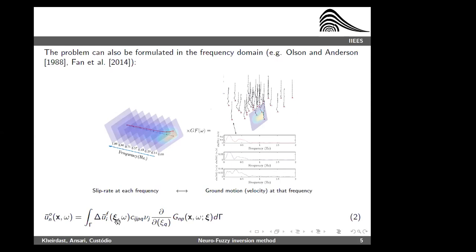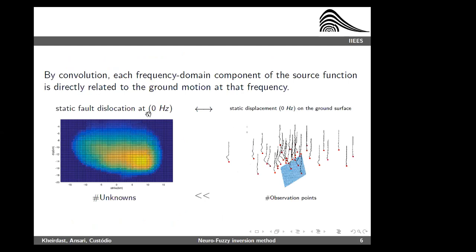The convolution no longer exists in the frequency domain formulation. The source function within each frequency is integrated with the Green's function, giving us the ground-shaking data. For example, at 0 Hz, the static dislocation can be converted using 0 Hz Green's functions to obtain only the static deformation of the ground surface. There is no physical constraint between different frequencies — only a kinematic constraint from the representation theorem. But we still have many parameters to find on the fault plane, and we use neurofuzzy function approximation to reduce this number.